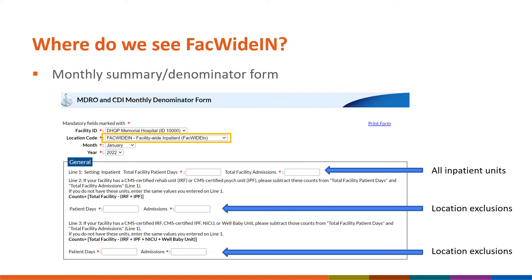We also see FACTWIDE-IN on the summary forms that collect denominator data. Denominator data is collected monthly for the MDRO CDI module LabID event reporting. For acute care hospitals, there are multiple lines of denominator data collected on the FACTWIDE-IN summary form. We can confirm at the top of this summary form that the location code is FACTWIDE-IN, or facility-wide inpatient. Line 1 collects patient days and admissions from all inpatient units in the facility, followed by lines 2 and 3, which have some location exclusions where you may need to subtract certain patient days and admission counts — only if applicable to your facility.